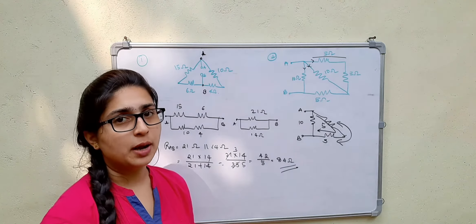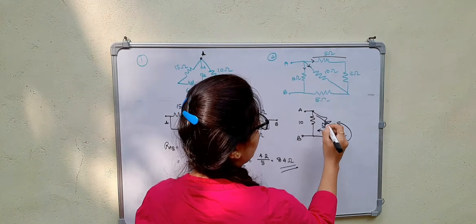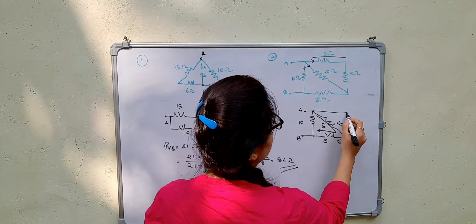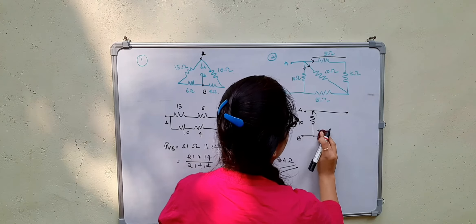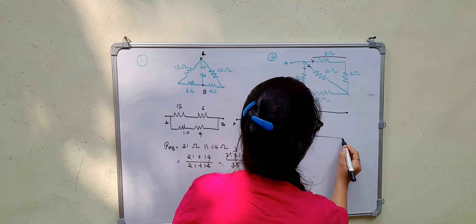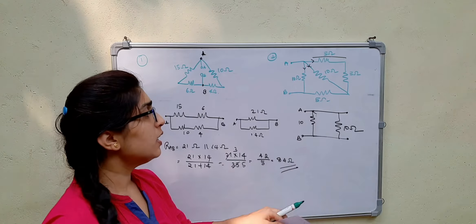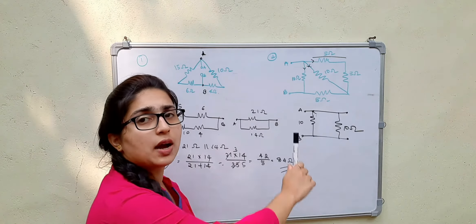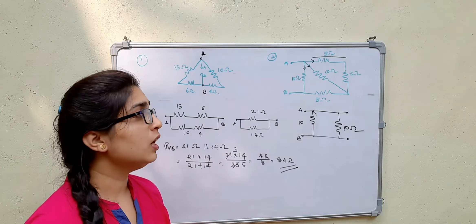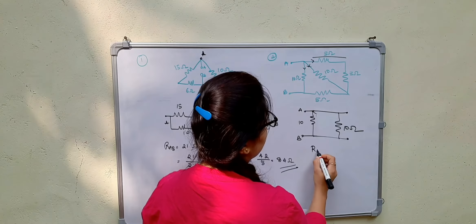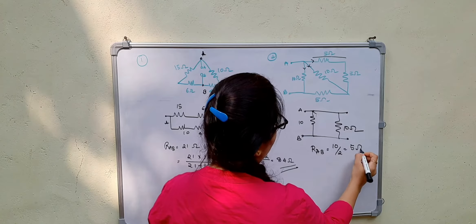Now the two 5 ohm resistors are in series: 5 + 5 = 10 ohms. Between the two terminals, we now have two equal resistors of 10 ohms in parallel, so R_AB = 10 / 2 = 5 ohms.